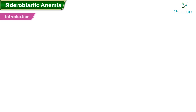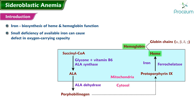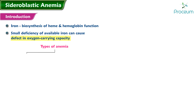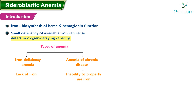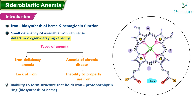Sideroblastic anemia introduction. Iron plays a key role in biosynthesis of heme and hemoglobin function; therefore, even a small deficiency of available iron can cause a defect in oxygen-carrying capacity. In fact, two of the most common types of anemia — iron deficiency anemia and anemia of chronic disease — are caused by iron problems: a lack of iron and an inability to properly use iron, respectively.